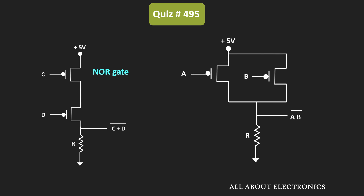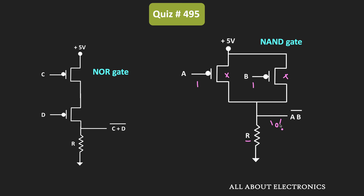The first circuit is the NOR gate implementation using PMOS transistors. The second circuit shows the NAND gate. For the NAND gate, when any one of the inputs is 0, the output is equal to 1. For example, when A equals 0, the PMOS transistor turns on and 5V appears at the output, making it logic high irrespective of input B. When both inputs are 1, both PMOS transistors remain OFF, and through the resistor, the output node connects to ground, giving output equal to logic 0. This is how the circuit works as a NAND gate.